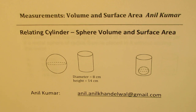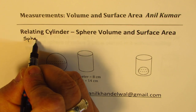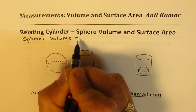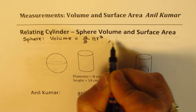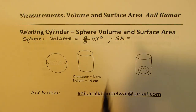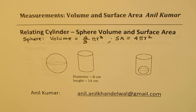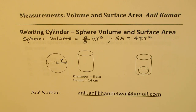We will consider volume and surface area of spheres and cylinders. To begin with, let me give you the formulas. When we talk about a sphere, the volume of a sphere is 4/3 π r³, and the surface area of a sphere is 4π r², where r is the radius. Whenever we consider a sphere, we take r as the parameter.